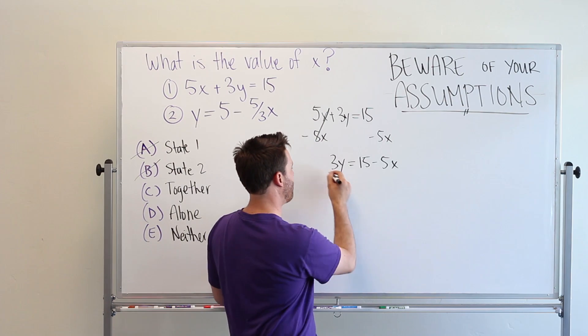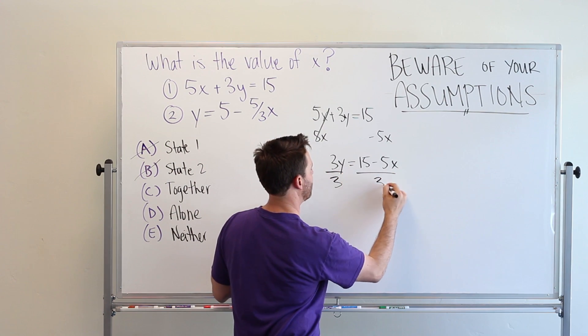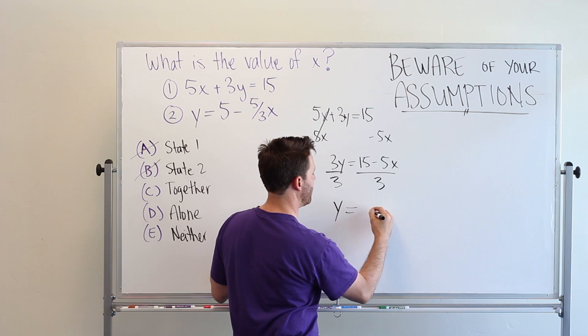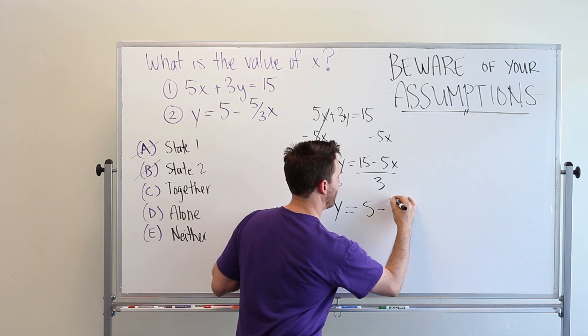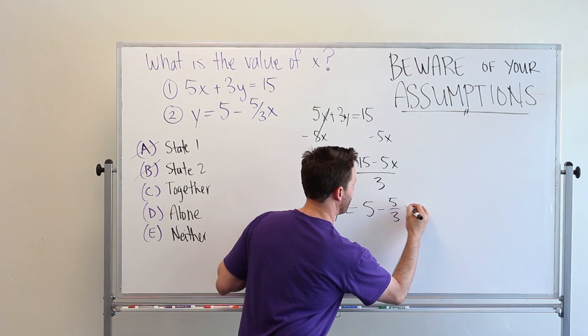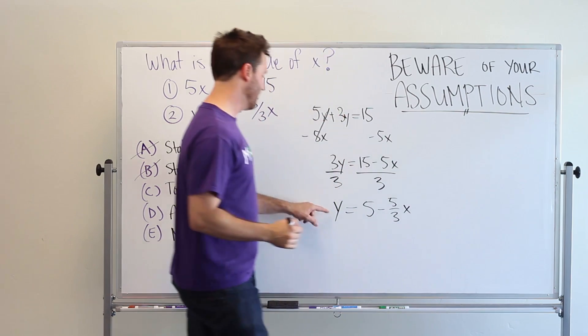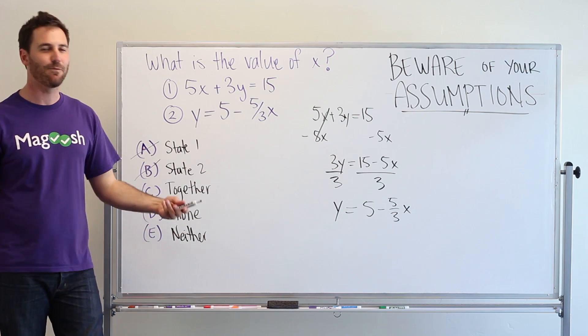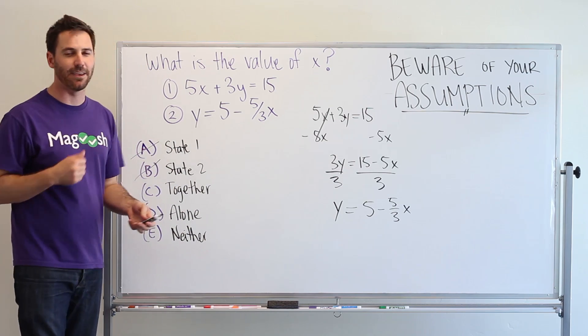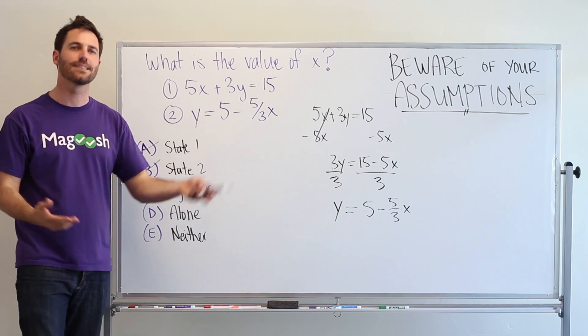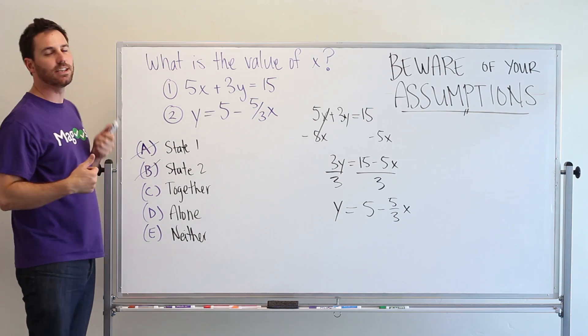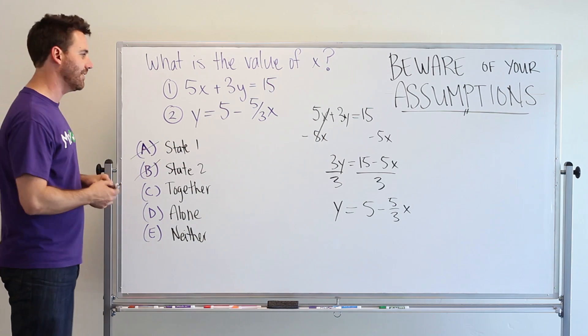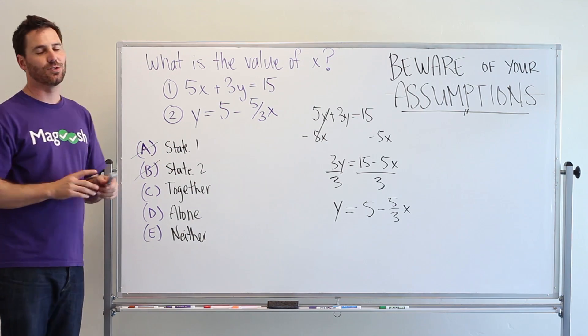Now I have 3y equals 15 minus 5x. Am I in the way? Can you see this? Okay. Now, I can divide by 3 on both sides. Right? Now, I have y equals 5 minus 5 thirds x. Look, this is the same as this. So, now I know that they're giving us just the same information in two different statements. It just looks different, but it's actually the same thing.